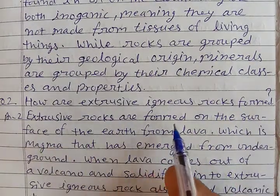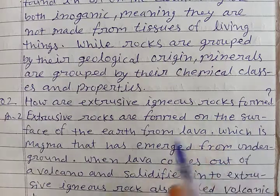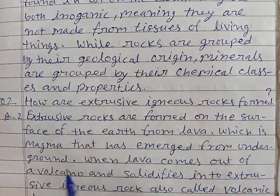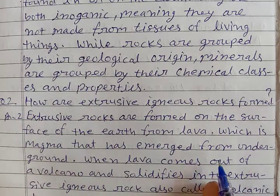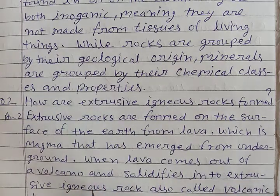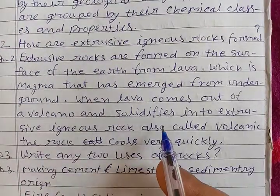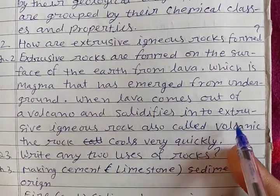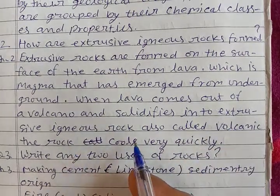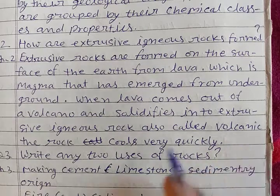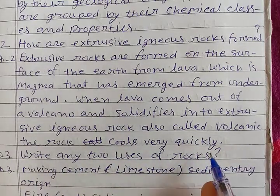Extrusive rocks are formed on the surface of the earth from lava, which is magma that has emerged from underground. When lava comes out of a volcano and solidifies into extrusive igneous rock, also called volcanic rock, the rock cools very quickly.